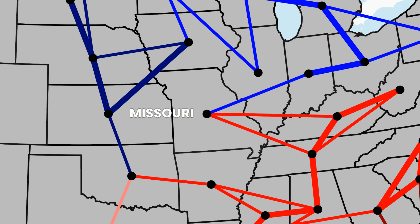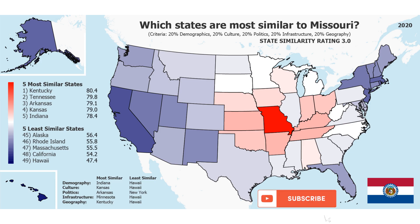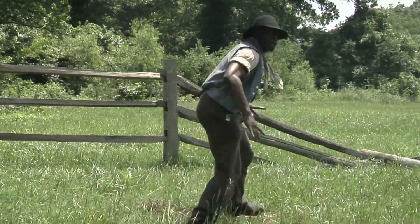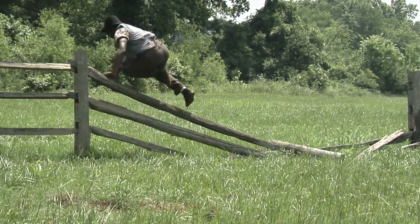The data also shows that Missouri is clearly a transitional state between the Midwest and the South. Missouri's two most similar states are southern states, Kentucky and Tennessee. Like many southern states, Missouri used to allow slavery and racial segregation.